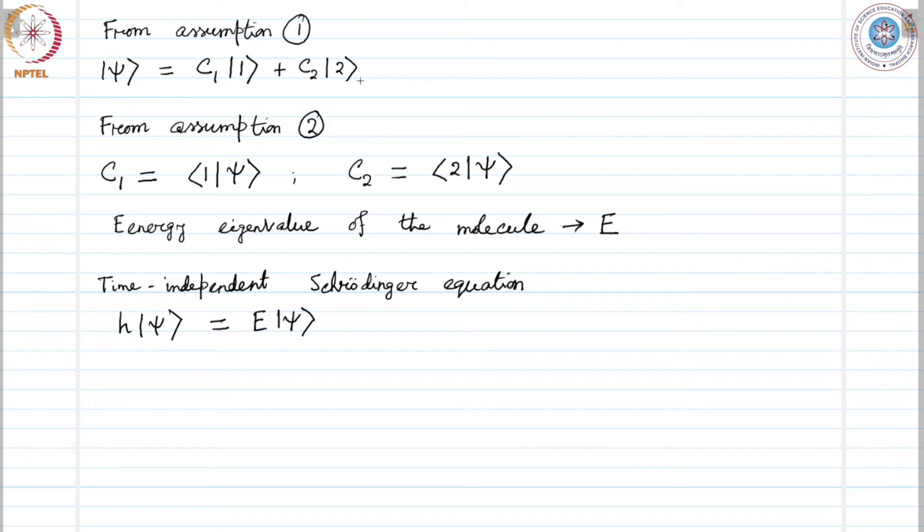This is the time independent Schrodinger equation for the molecule. With the help of this expansion here, we can write that H acting on C1 one plus C2 two gives us E times C1 one plus C2 two. This is what we obtain.